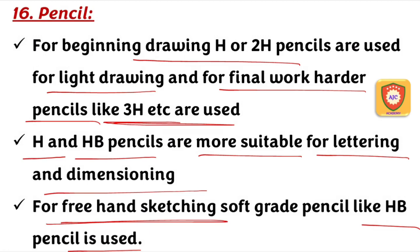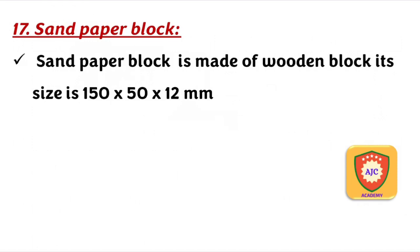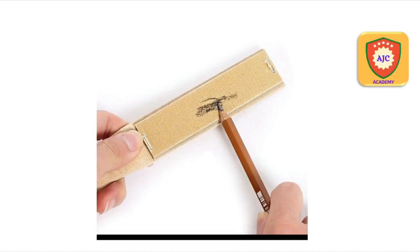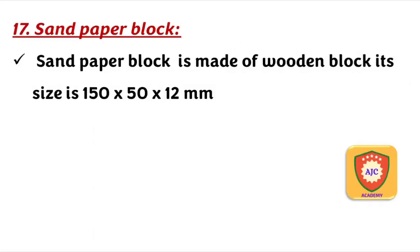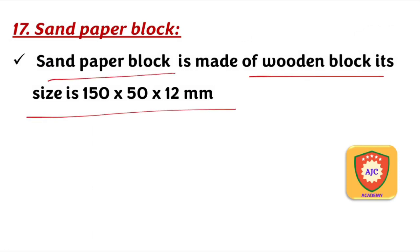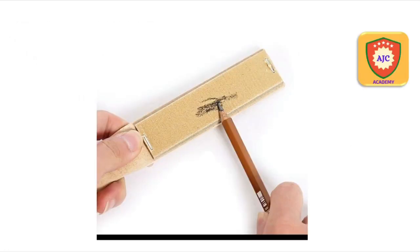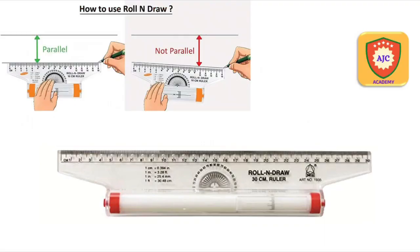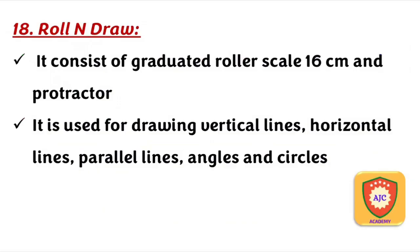This is the sand paper block, used to sharpen the pencil. It consists of a wooden piece measuring 150 x 50 x 12 mm, used as a roll-and-draw sharpening tool.